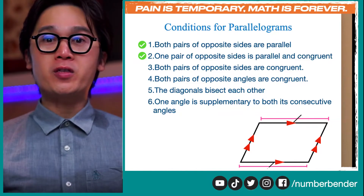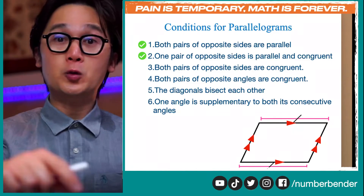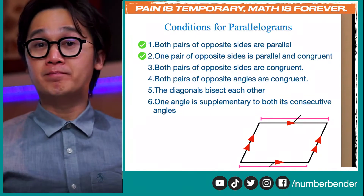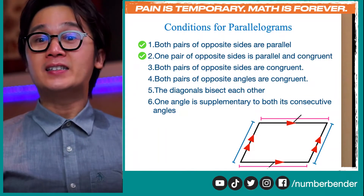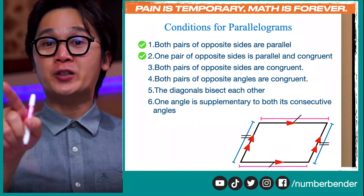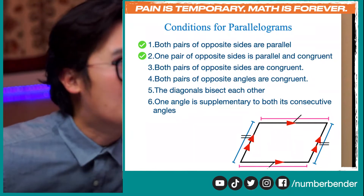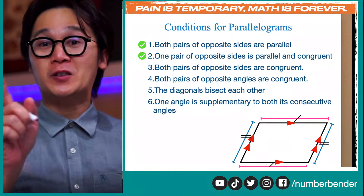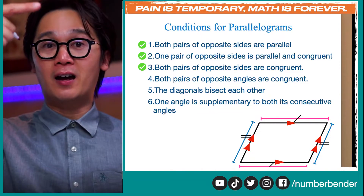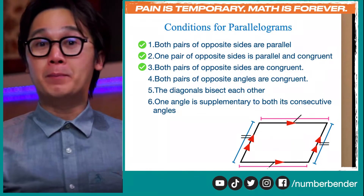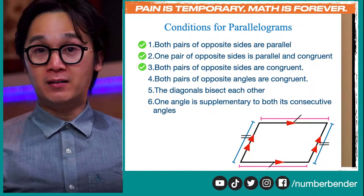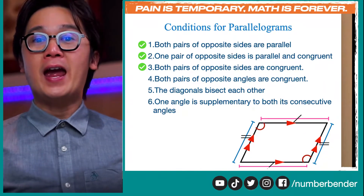Condition three: both pairs of opposite sides are congruent. Using this parallelogram, we denote that the two horizontal opposite sides have the same measurement, and the two diagonal opposite sides also have the same measurement. So the tick marks show that both pairs of opposite sides are congruent to each other, and therefore it will be considered a parallelogram. That is condition number three.